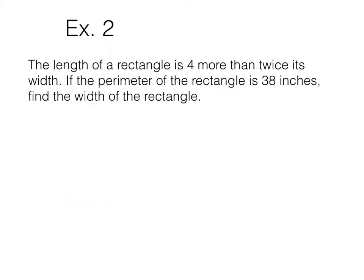Length of a rectangle is 4 more than twice its width. If the perimeter of the rectangle is 38 inches, find the width of the rectangle. Of course, I'm okay with you guys being able to figure out a problem without an equation, but if I ask for the equation, that's part of the assignment. So the perimeter here is 38. And let's define our variables. So let's define the width as W.